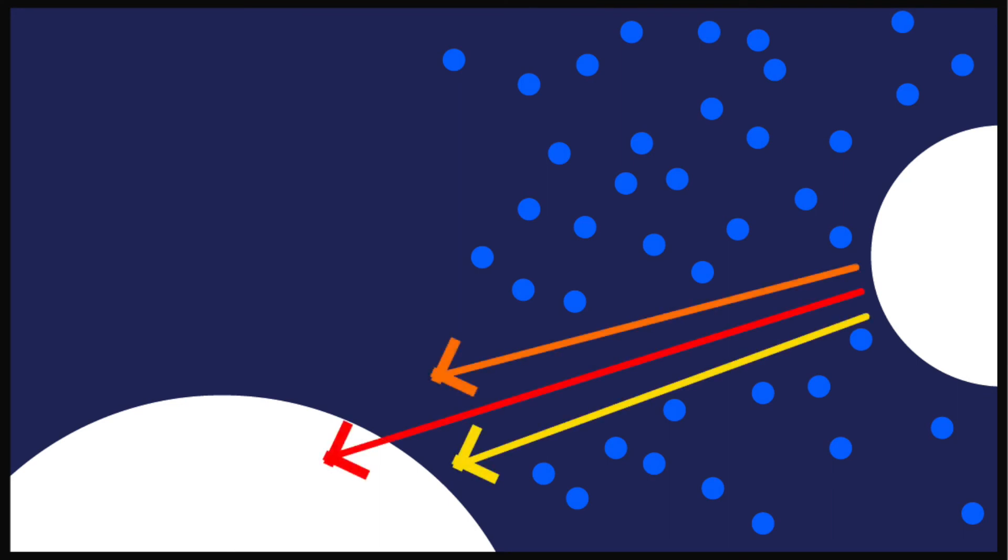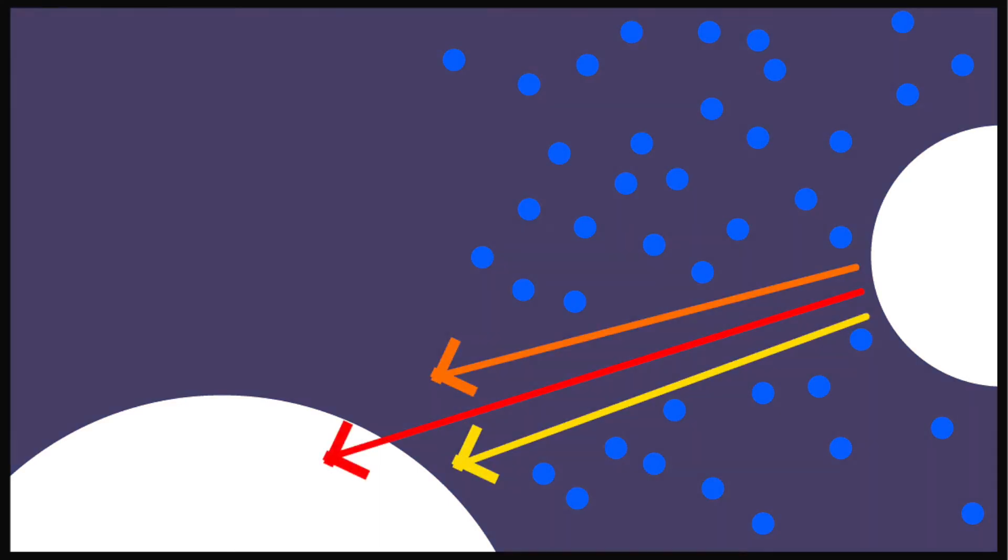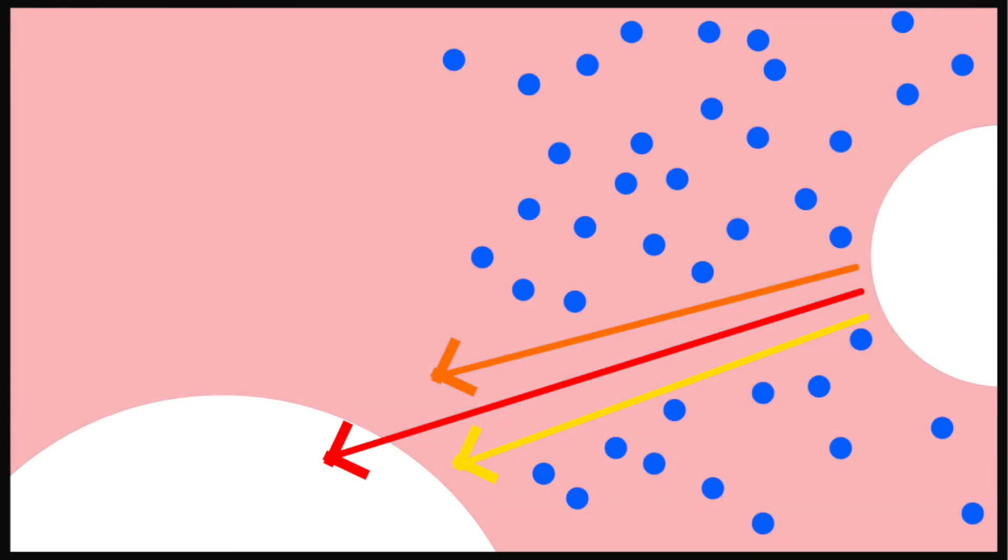But when the sun is low in the sky, it's further away from the same vantage point. In this instance, we see colors with longer wavelengths, like red, yellow, and orange, because the blue light has already been dispersed further away from our vantage point.